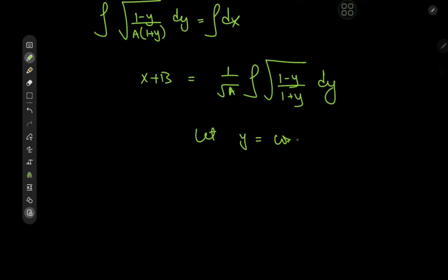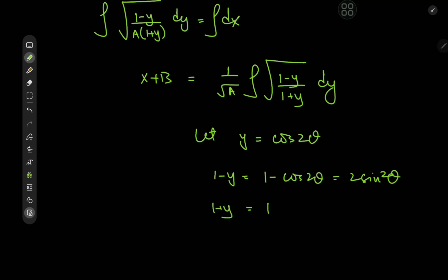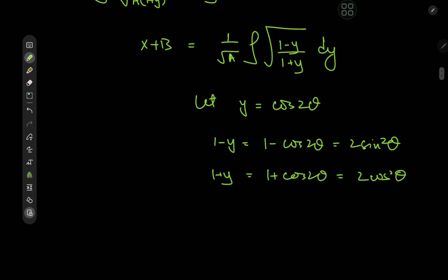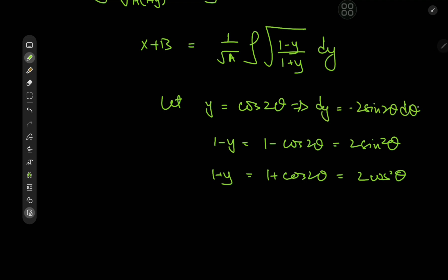On the left we have 1/root(A) times the integral of root((1 minus y)/(1 plus y)) dy. We make a nice substitution here, letting y equal to cosine(2θ). The reason is that 1 minus y becomes 1 minus cosine(2θ), which by the double angle formula is 2 sin²θ, and similarly 1 plus y equals 1 plus cosine(2θ) equals 2 cos²θ. Differentiating, dy equals negative 2 sin(2θ) dθ.